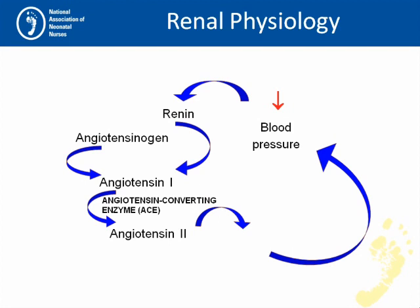Angiotensin 2 also triggers the adrenal glands, and the adrenal glands release aldosterone. Aldosterone causes the kidneys to retain sodium and excrete potassium. The body will retain water in response to the extra sodium, and then the blood volume will increase, which of course increases blood pressure.